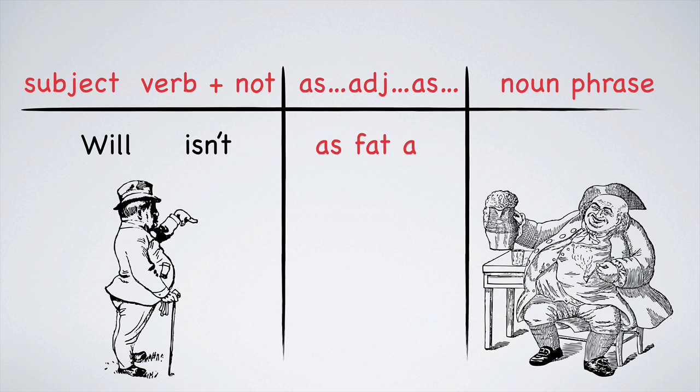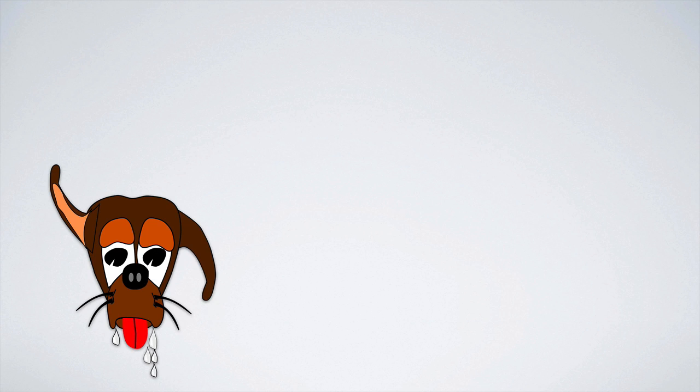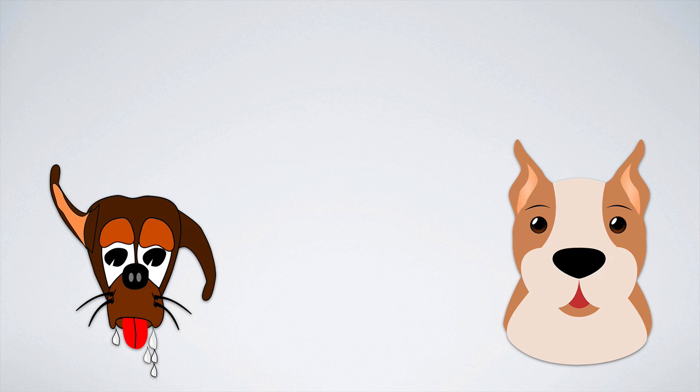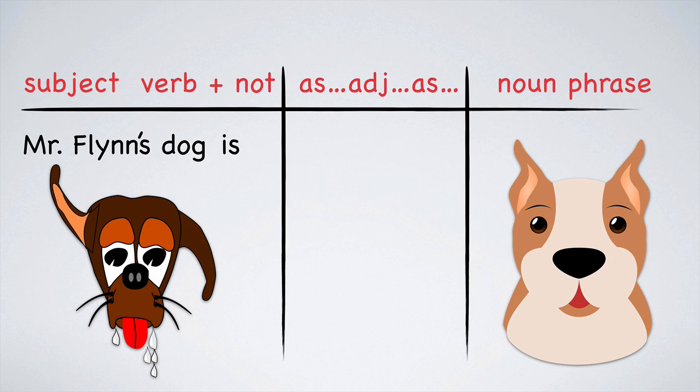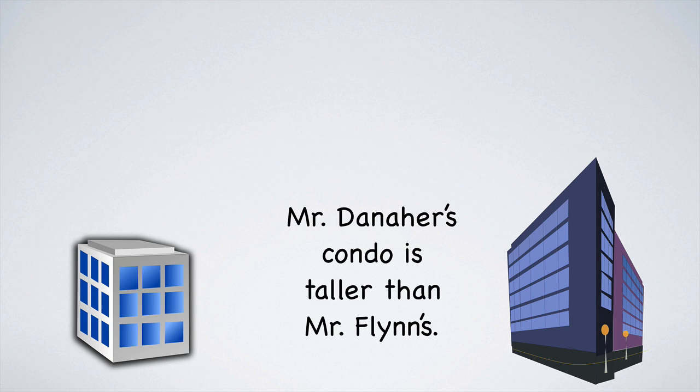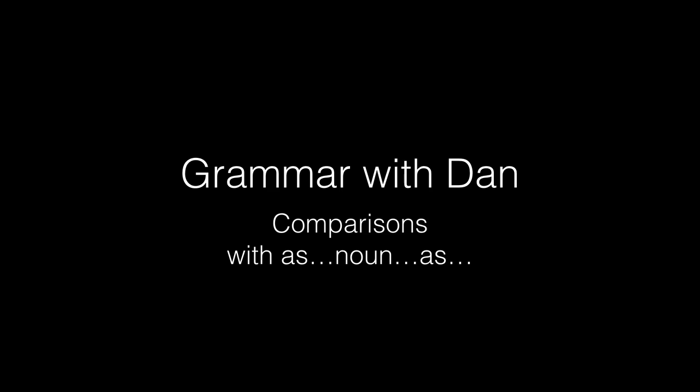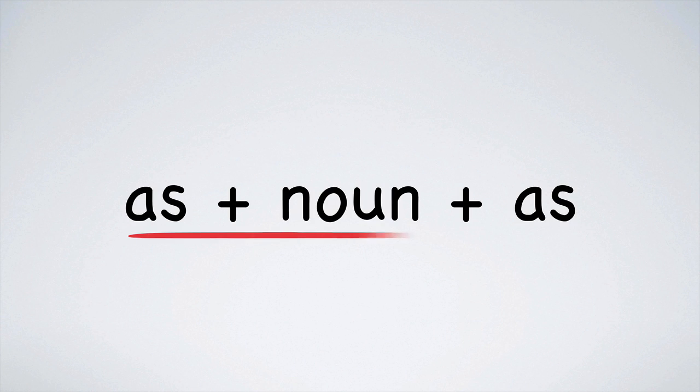Danaher isn't as fat as Mr. O'Flynn. To tell you the truth, I think that's why they're friends - O'Flynn makes Danaher feel skinny. Look at this sad looking hound dog. This is Mr. O'Flynn's dog, and this little guy is Mr. Danaher's. Clearly, Mr. Flynn's dog isn't as cute as Mr. Danaher's. And this is where Flynn lives, and this is Danaher's condo. Mr. Danaher's condo is taller. Flynn's condo isn't as tall as Mr. Danaher's.